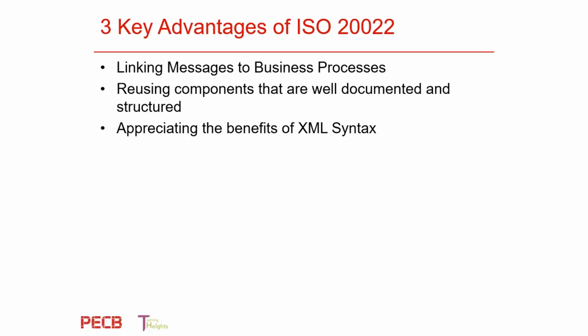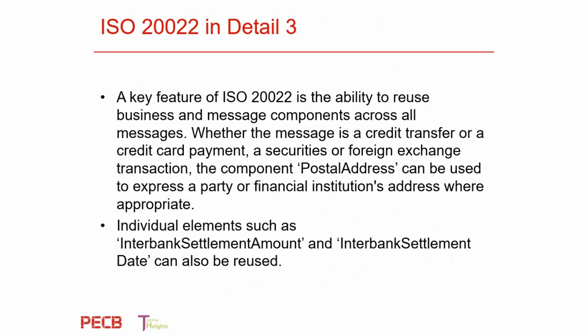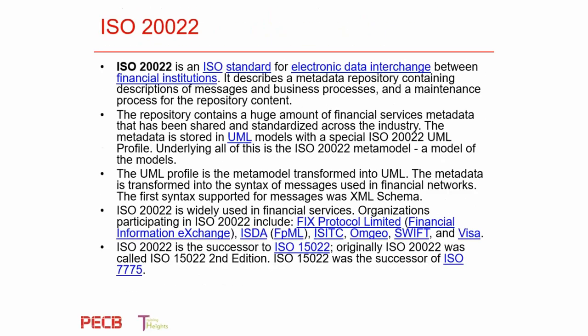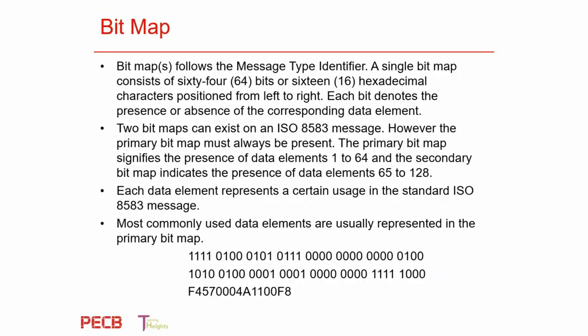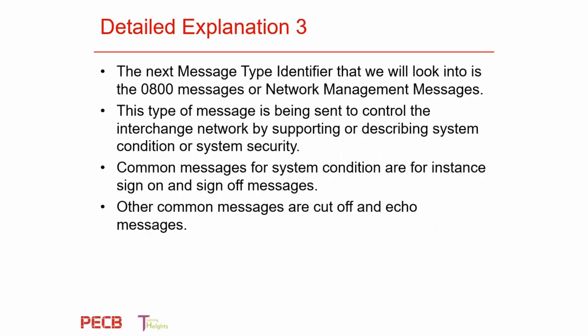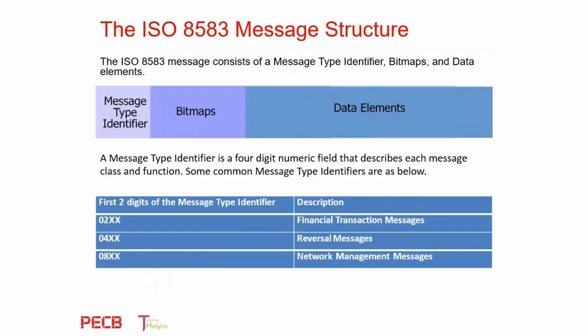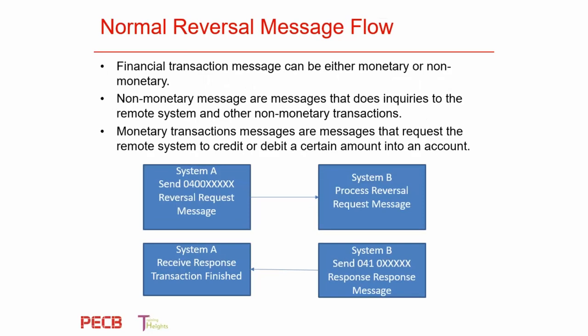There's even a document that maps ISO 8583 and how you can turn it into ISO 20022. Interoperability is the key word here. You want to make sure that you use something that is global — that irrespective of what payment platforms you're looking at, what you've done will work with it. The key advantages of ISO 20022: linking messages to business processes, using components and using XML.